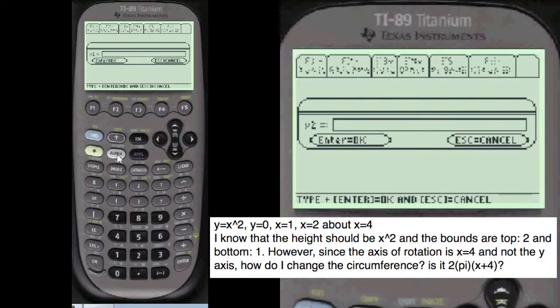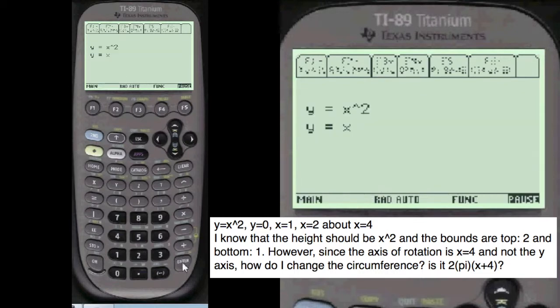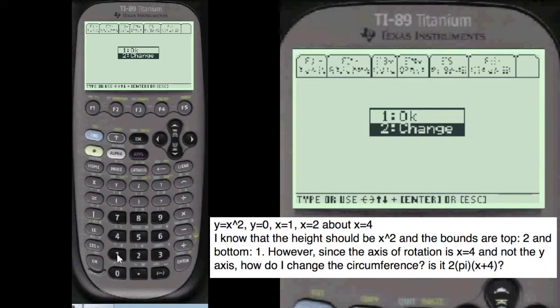And they give you as y equals 0. I don't know what that means. But there always has to be two functions because you have to define the region that you're finding the volume of. Alpha x. I always show you what you've entered. You can change it if you want. I say it's okay, number 1.